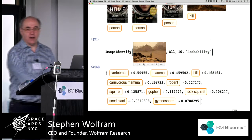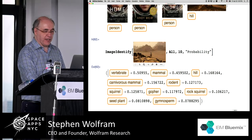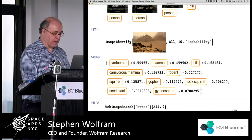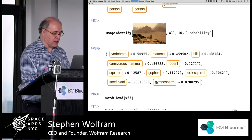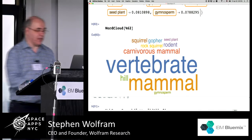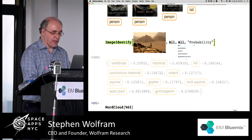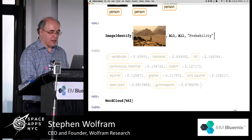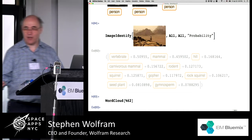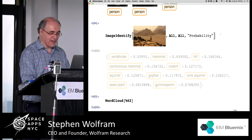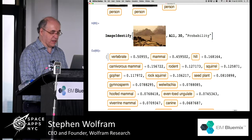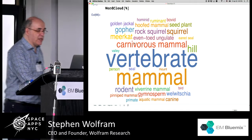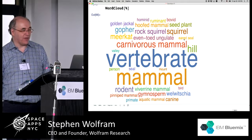It would probably make a more interesting word cloud. Let's take those things and make a word cloud of what it thought that picture might be. Let's let it go all the way down — let's say 'all' — it'll probably generate a huge long list. Let's get it to at least show us like 30 of those things, and make a word cloud out of those things just for fun. There's the word cloud. The meerkat is down there and the eared seal is down there, with smaller probability values. That's a little bit about what Wolfram Language can do.